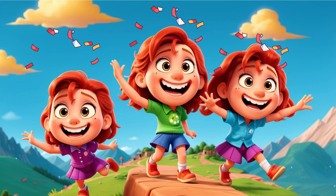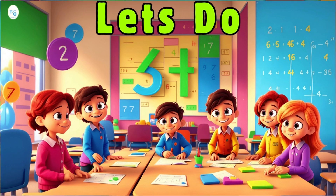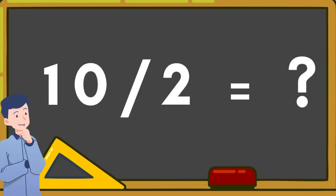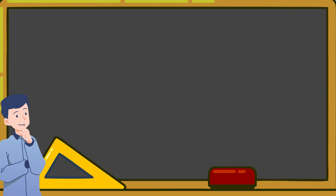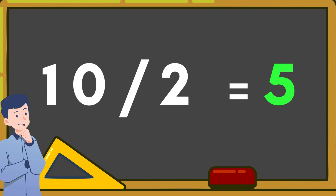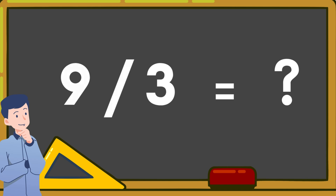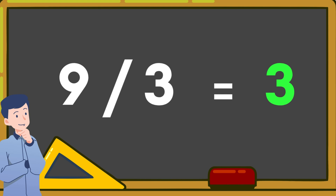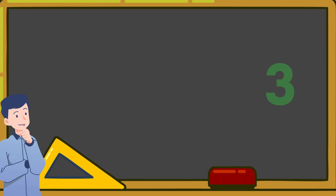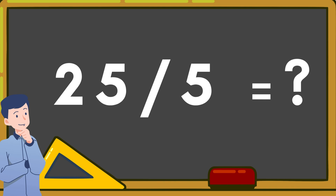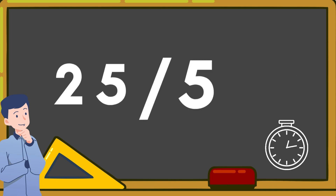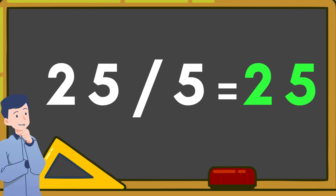Brilliant work kids. Let's do Division. 10 divided by 2 is equal to — yes, you're right, 10 divided by 2 is equal to 5. 9 divided by 3 is equal to 3. 25 divided by 5 is equal to — 25 divided by 5 is equal to 5.